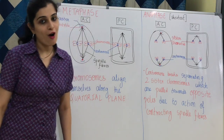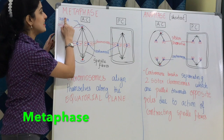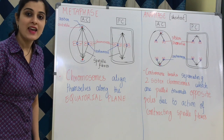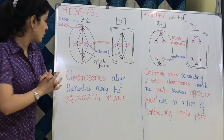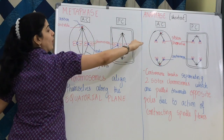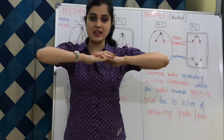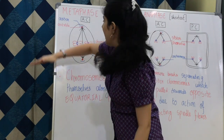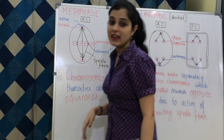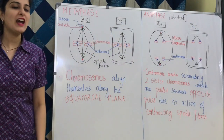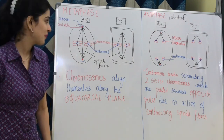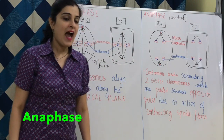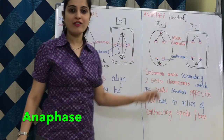The second stage of karyokinesis in mitosis is metaphase. In metaphase, chromosomes align themselves along the equatorial plane — that is, in the midline of your cell. So when you see chromosomes aligned along the equatorial plane, that phase is definitely metaphase.